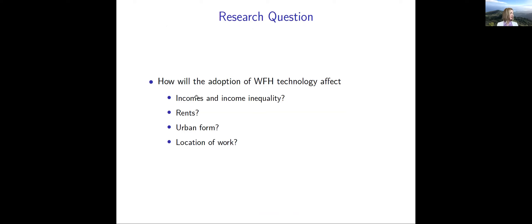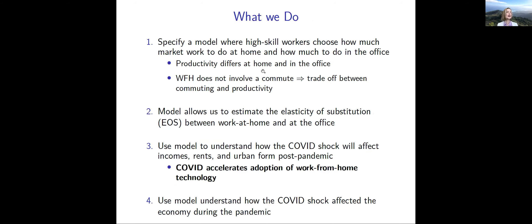What we're asking in this paper is how the adoption of work-from-home technology will affect income inequality, rents — both commercial and residential — and urban form: where people live and where we work. We specify a model where high-skill workers choose how much time to work at the office in the central business district and how much to work at home. There are differences in productivity of work at home vs. the office, but the benefit of working from home is it doesn't require a commute. The model allows us to estimate the elasticity of substitution between work from home and work at the office using pre-pandemic data.